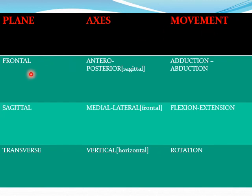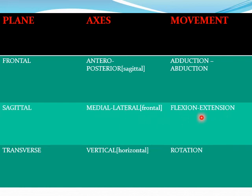In the frontal plane, the axis passes is the sagittal, i.e. anteroposterior, and movements that occur are adduction and abduction. In the sagittal plane, the axis passes is the frontal, i.e. mediolateral, and movements are flexion and extension. In the transverse plane, the axis passes is the horizontal or vertical, and movement that occurs is rotation.